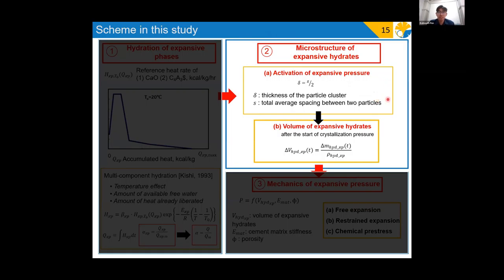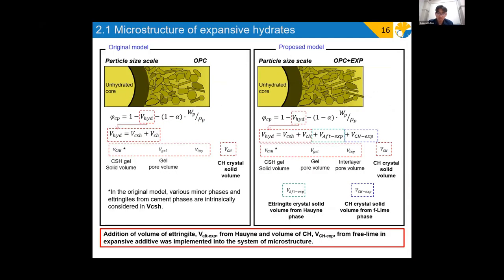After we have obtained proper degree of hydration of expansive additive or expansive Asian phases, the next step is to consider the microstructure itself. Based on the degree of hydration of phases, corresponding products would be produced. For example, free lime would produce the portlandite, whereby C4A3S would produce ettringite given enough calcium sulfate. In the original model of DUCOM, the minor phases such as ettringite, monosulfate, gypsum, and others are intrinsically considered in the volume of CSH. But as an extension for the expansive additives microstructure model, addition of expansive ettringite and calcium hydroxide from free lime were added to the current microstructure model.